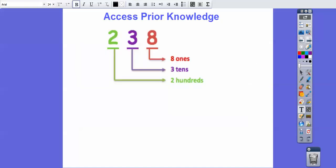Here we go. So remember, when we have a three-digit number, this is the ones place. So there's 8 ones, there's 3 tens, and there's 2 hundreds. So this could be 200 plus 30 plus 8. Gives us 238.